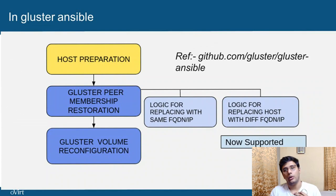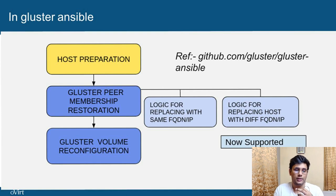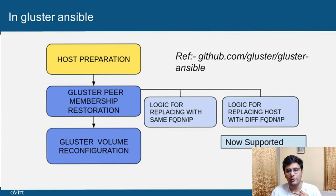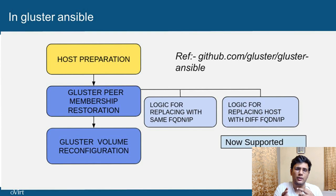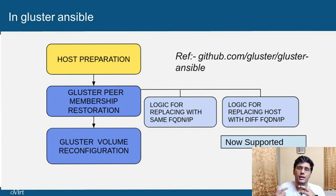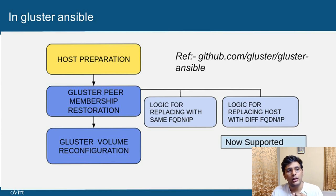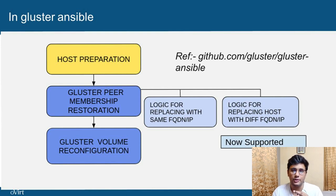Before I dive into how it's implemented in Overt Engine, I'd like to talk about the implementation that's already been in Cluster Ansible. Replace Host has been there in Cluster Ansible for quite some time, but it had only been implemented for peer reconfiguration and also only for same node FQDN. Recently we have updated it for different node FQDN as well. Cluster Ansible provides a CLI way for you to completely replace the host.